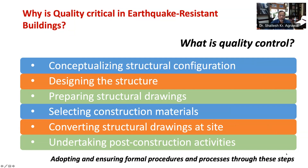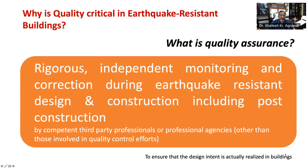There is another important aspect other than quality control, which is quality assurance. Rigorous independent monitoring and correction need to be undertaken by competent third-party professionals or professional agencies — other than those involved in quality control efforts — so as to ensure that the design intent is actually realized in buildings. This is known as quality assurance and is required in each of these steps.